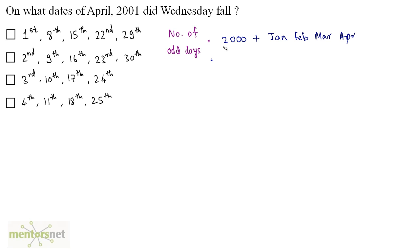So what are the number of odd days till 2000 years? Well 2000 is a multiple of 400, so I can easily say that the number of odd days are 0. So this is 0 plus January is a 31 day month, so this is 31 plus 2001 is not a leap year, so February will be 28 days long plus March is 31 plus April. We are calculating till 1st of April, so we will take 1 here. So this is equal to, if you add all of these, you will get 91.